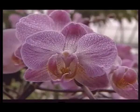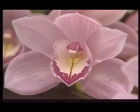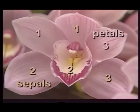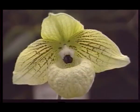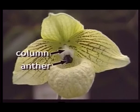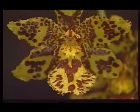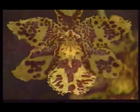Orchids are another example of flowers that have evolved in ways that attract insects. The orchid flower is made up of three sepals arranged radially. There are also three petals, one of which acts as a landing pad for insect pollinators. The female and male parts in the center of the flower are fused into a column with a single anther at the end. Orchids come in many different colors and scents that attract insects. The scents range from sweetly fragrant to rotting garbage. Different smells attract different insects.